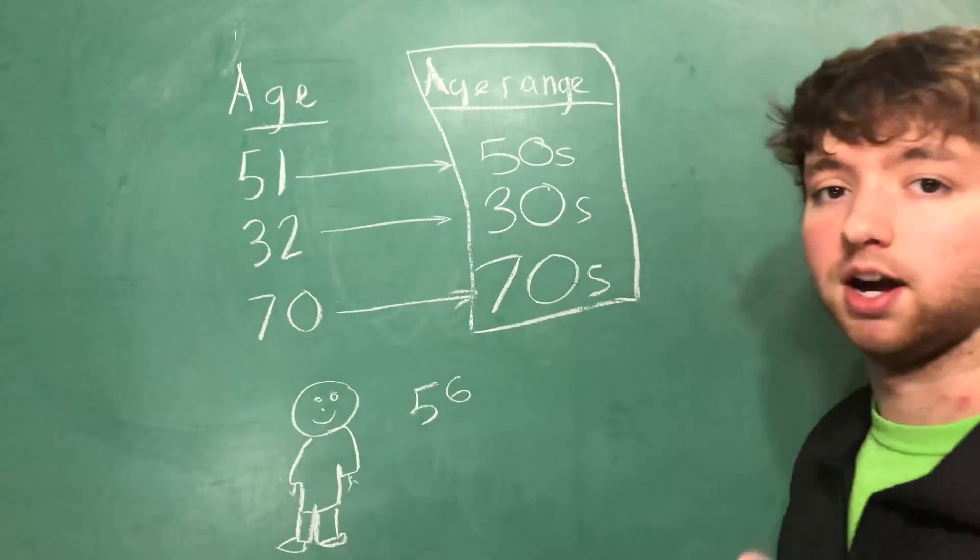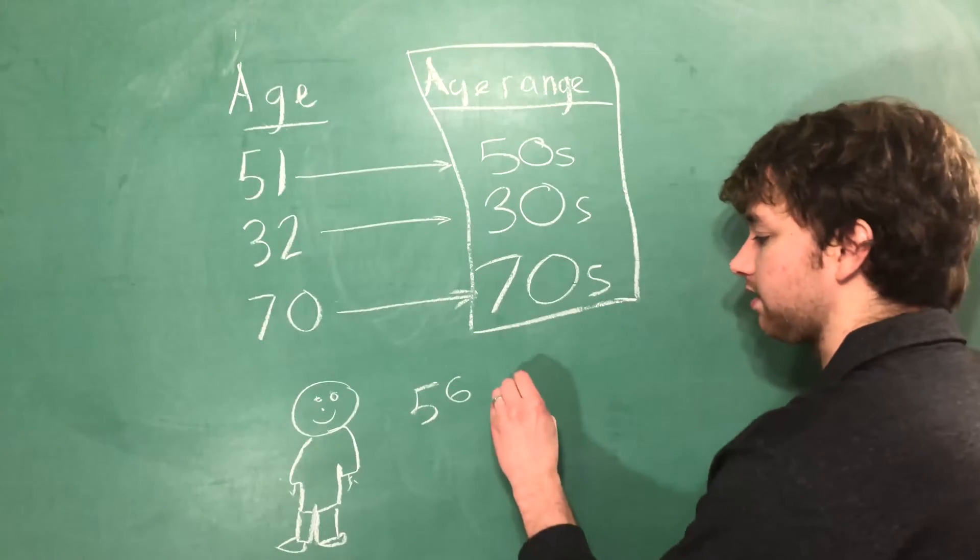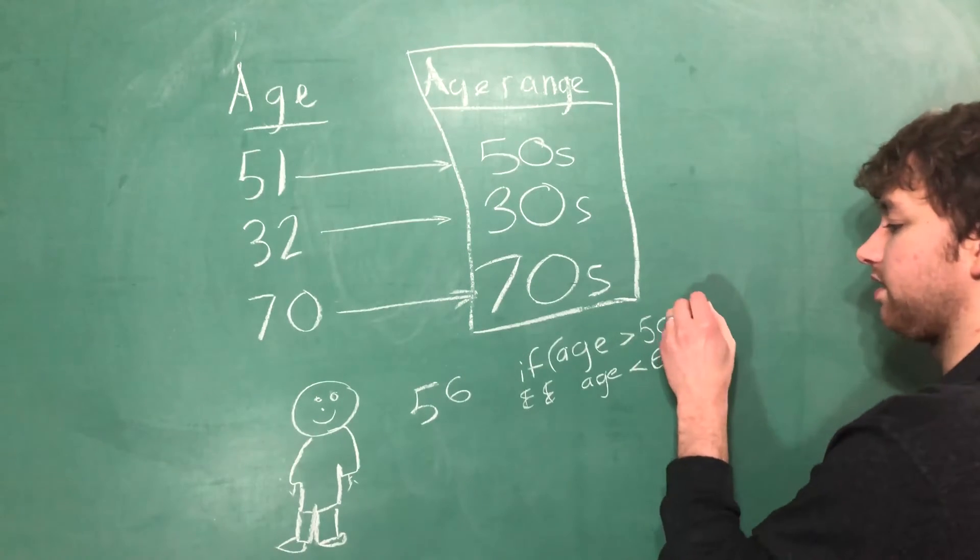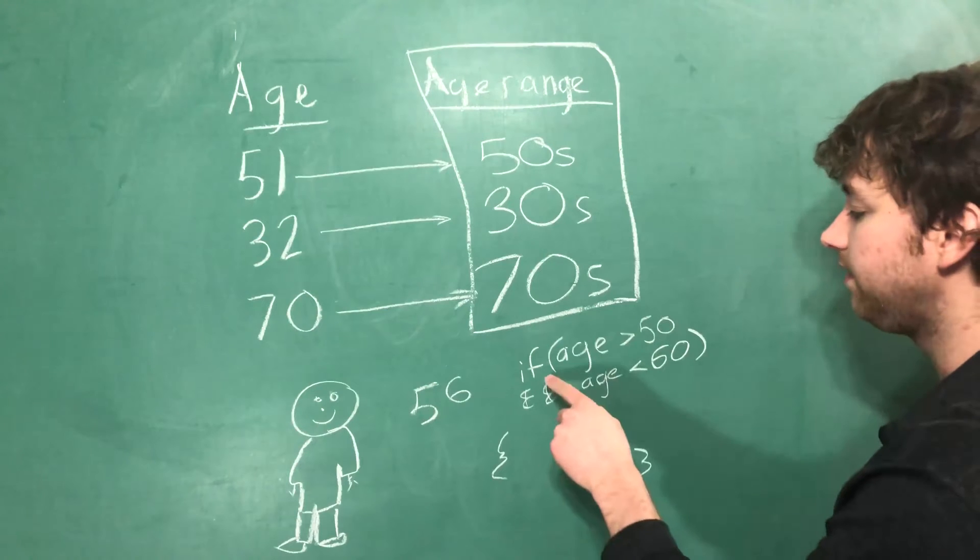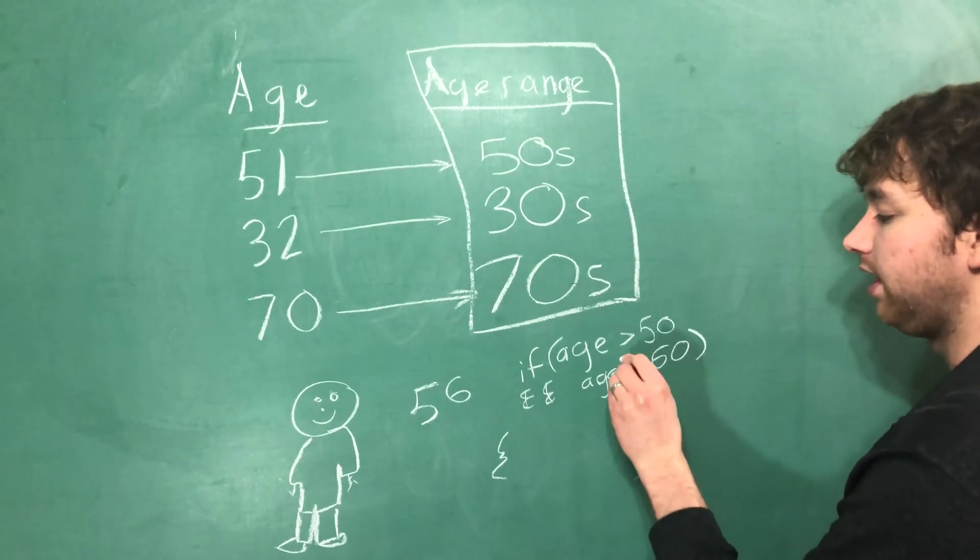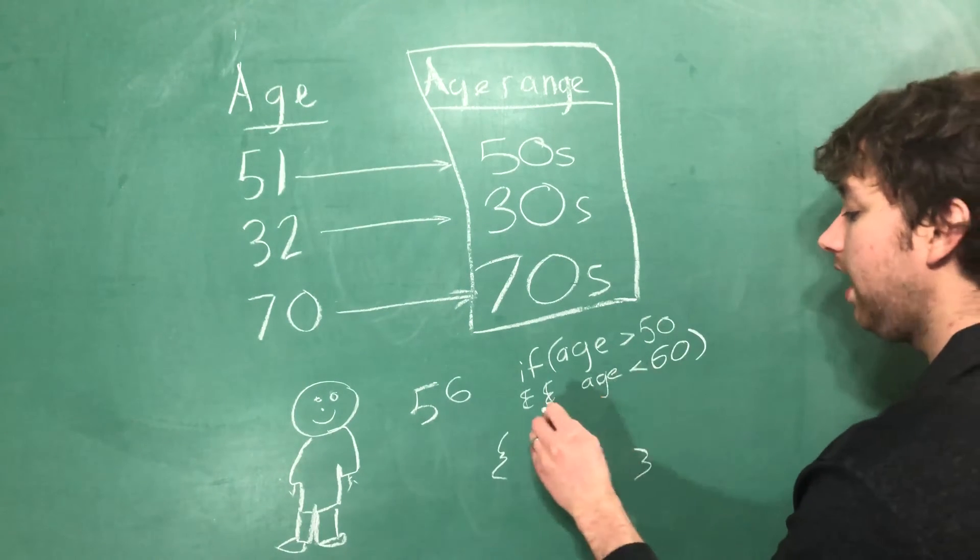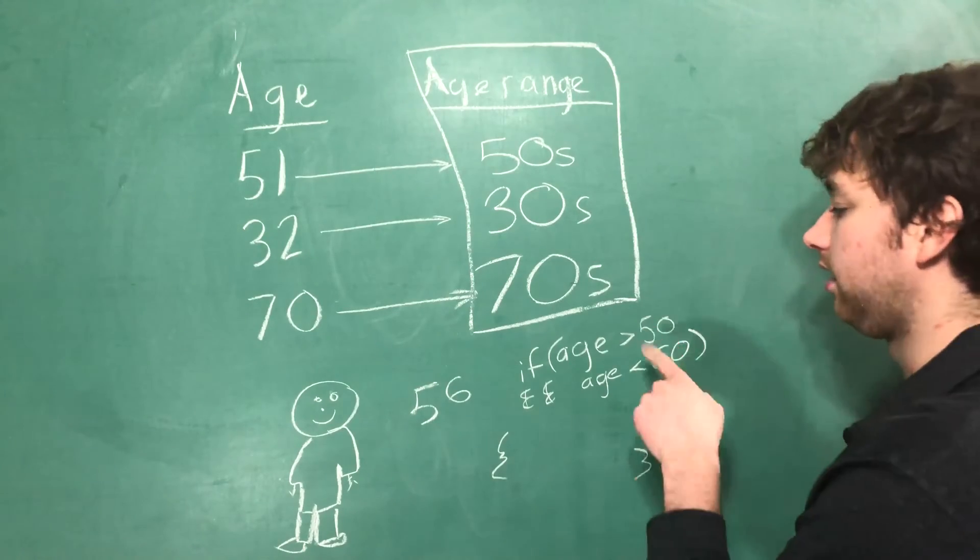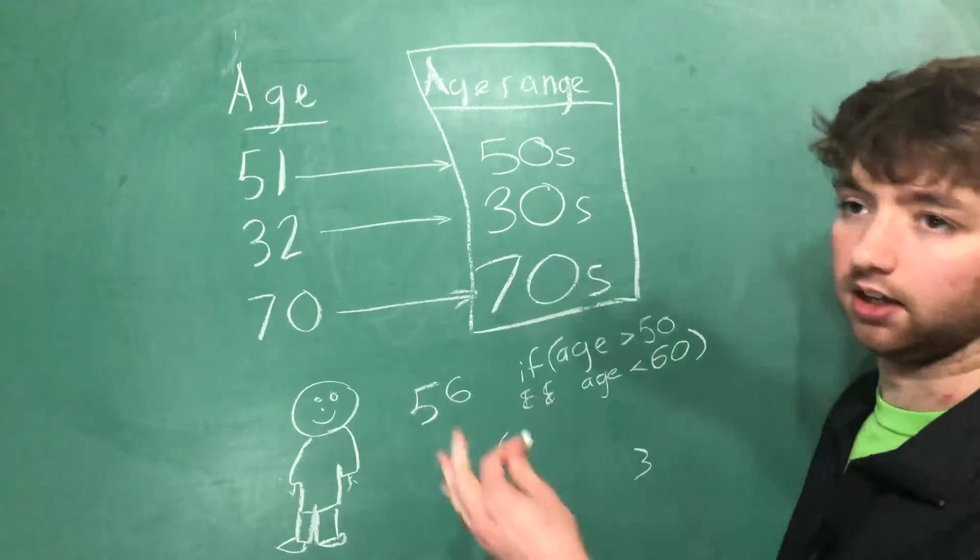We do this in programming all the time. For example if you did something like this. Here is an example of binning where you take an if statement and you have two conditionals. If age is greater than 50 and age is less than 60. That's saying age is between 50 and 60.